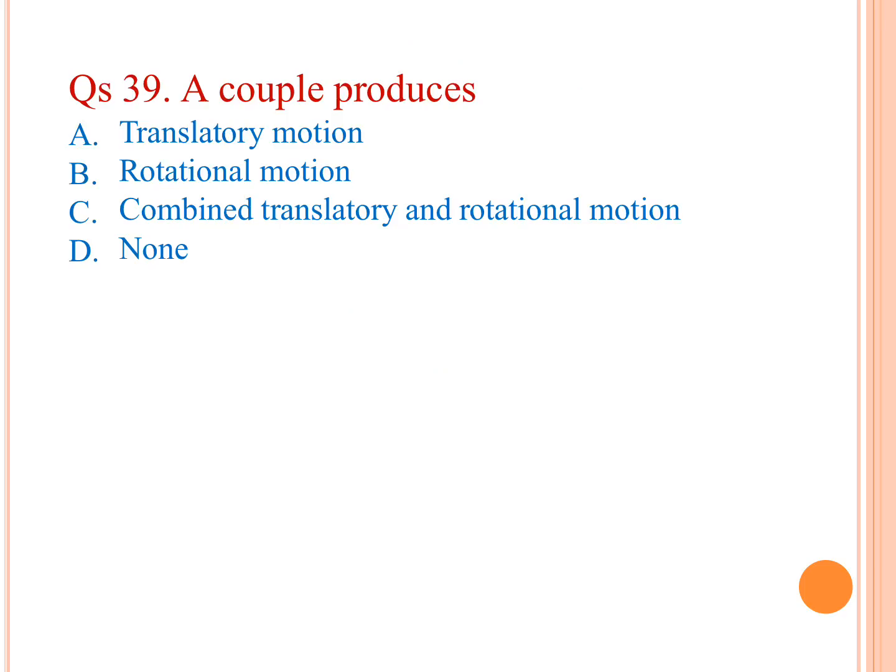A couple produces: A) translatory motion — no, B) rotational motion — yes. B is the answer.